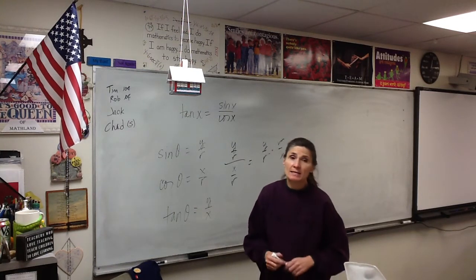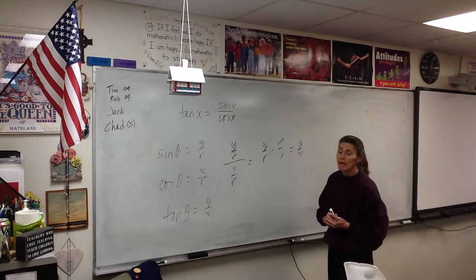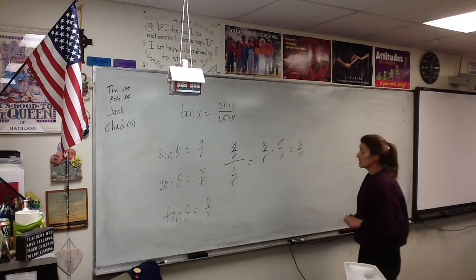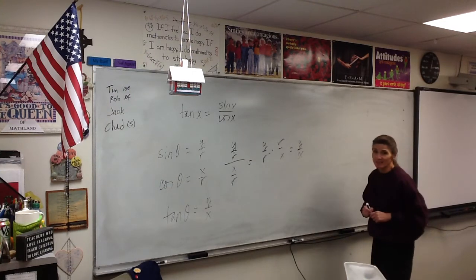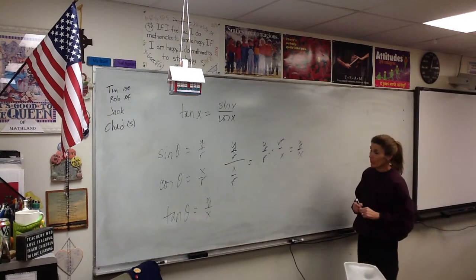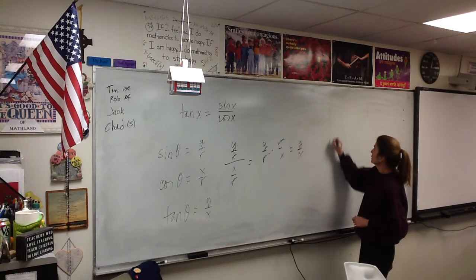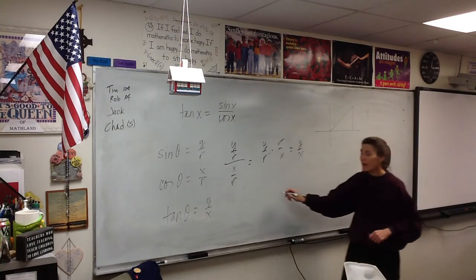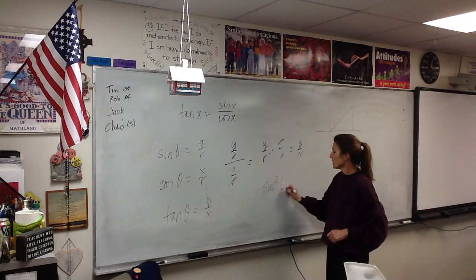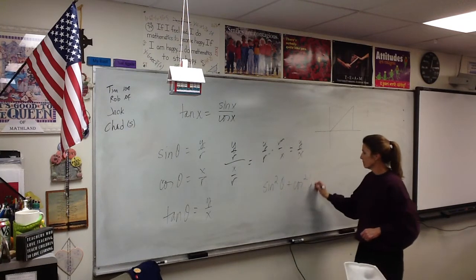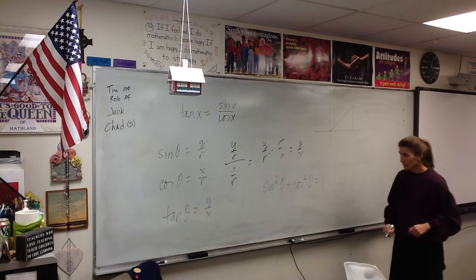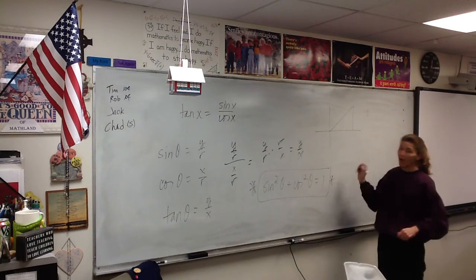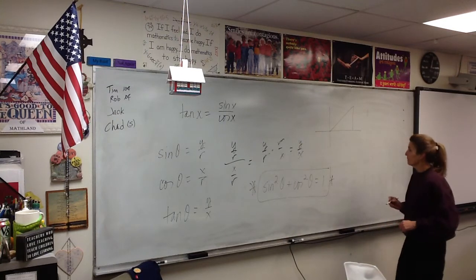The Pythagorean identities are huge and we absolutely need to know those. We use them all the time — they are used constantly in the work we're getting ready to do. So let's take a look at the scenario and make sure it makes sense why sine squared plus cosine squared equals one. Big news. Boxes, stars, highlighters — everything for that one.